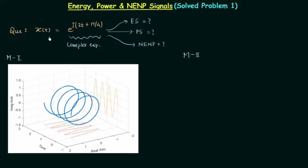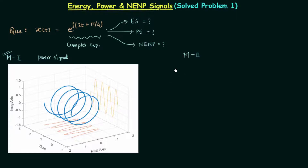Since the amplitude remains constant, signal x(t) is simply a power signal. You can see how easily we obtained the answer within seconds because we already knew the plot of the signal, and by looking at the plot we can determine the type of signal. However, this method is best suited for multiple choice questions.